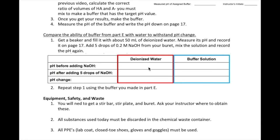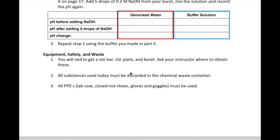Lastly, you will compare the ability of your buffer versus water in resisting pH change. Get a beaker, fill it up with water, and record its pH. Add 5 drops of 0.2 molar NaOH from your burette into the beaker, mix it, and then measure the pH again. Calculate the pH change that occurs after the addition of the NaOH. You are going to repeat those same steps with the buffer that you just made in the previous step. Then I will talk about the equipment, safety concerns, and some waste disposal information.